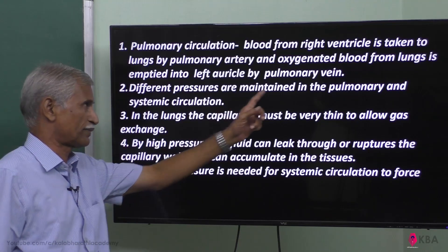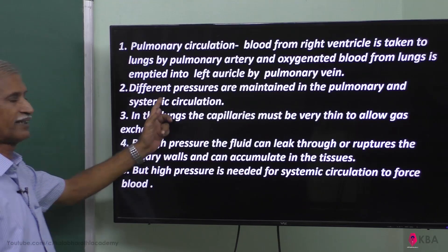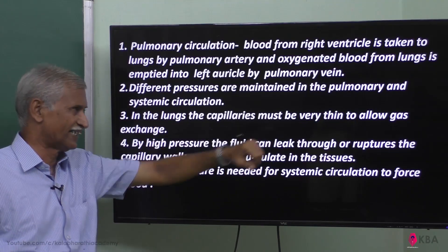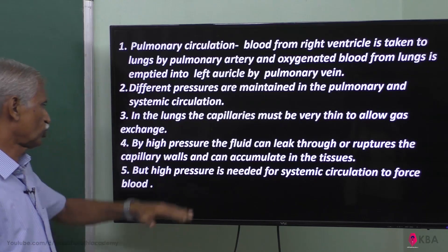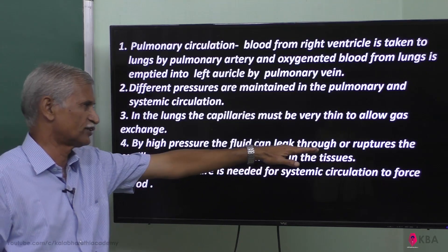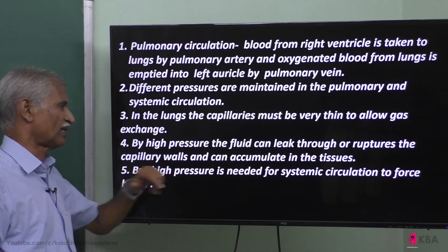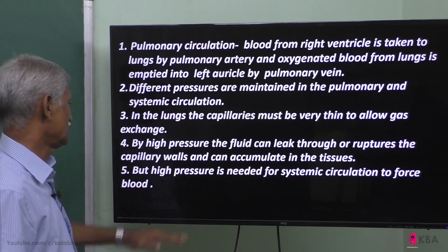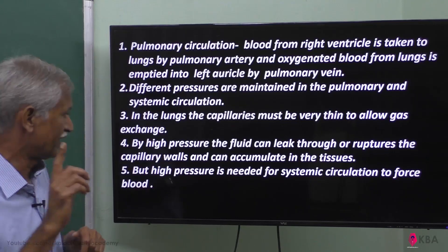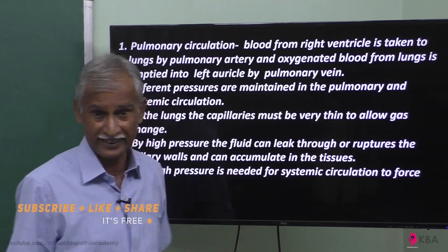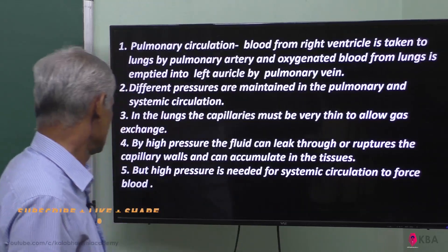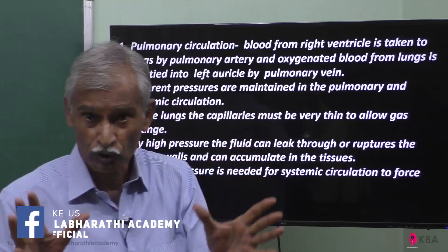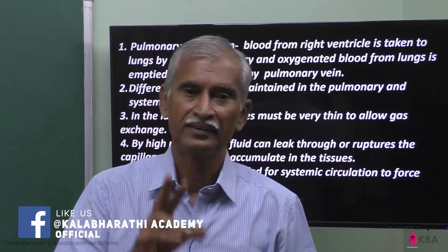Different pressures are maintained in pulmonary circulation and systemic circulation. In the lungs, capillaries must be very thin to allow gas exchange, so high pressure would cause fluid to leak or rupture the capillary wall and accumulate in the tissue. Therefore, high pressure must not be present in pulmonary circulation. But high pressure is needed for systemic circulation in order to force blood to all tissues of the body.